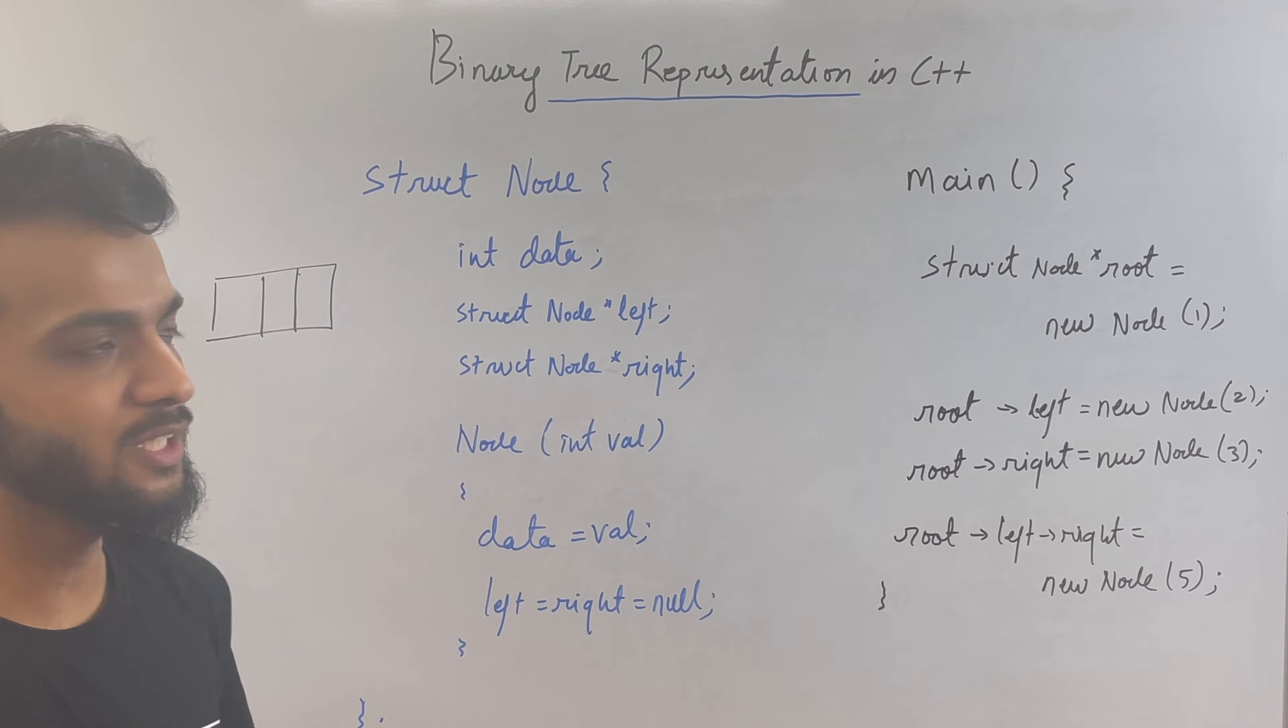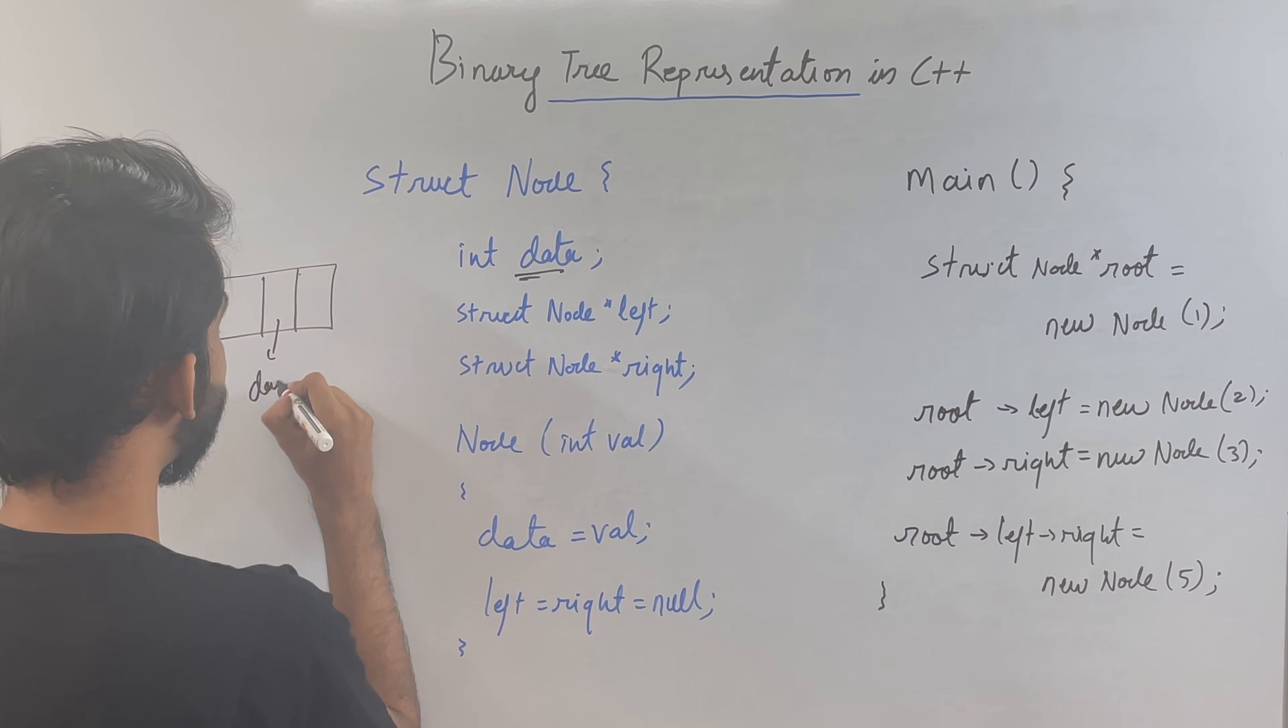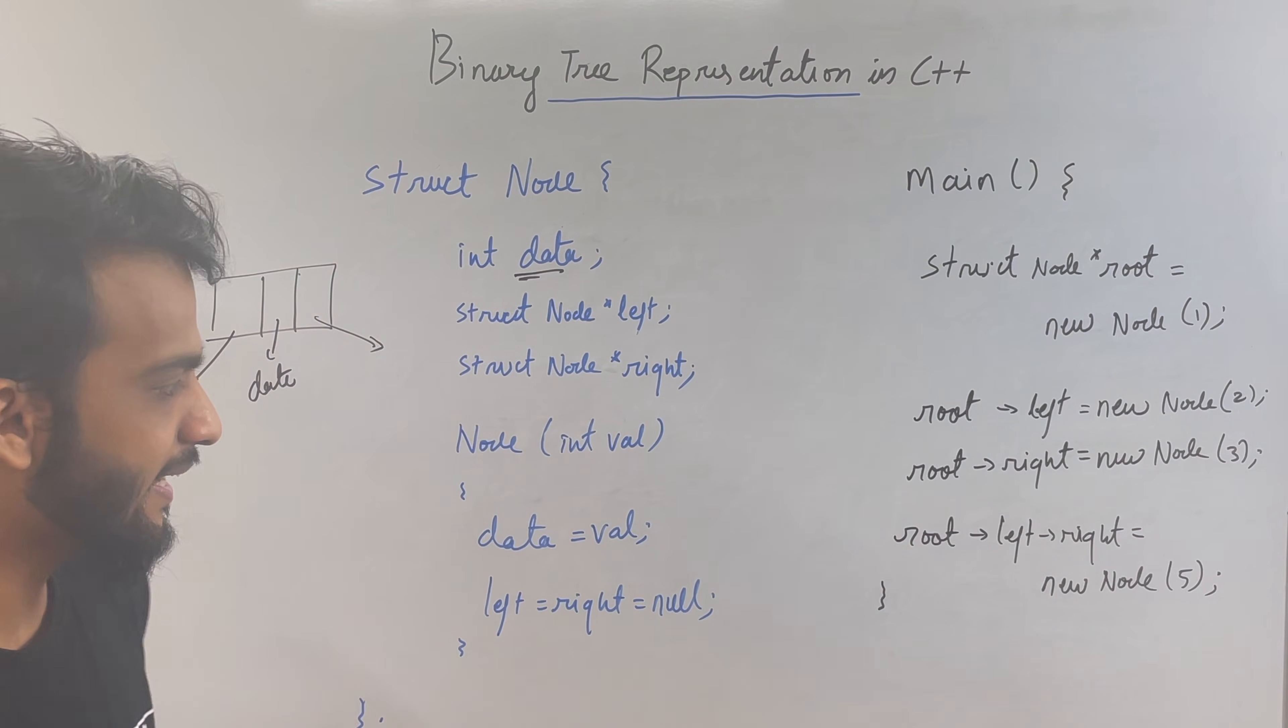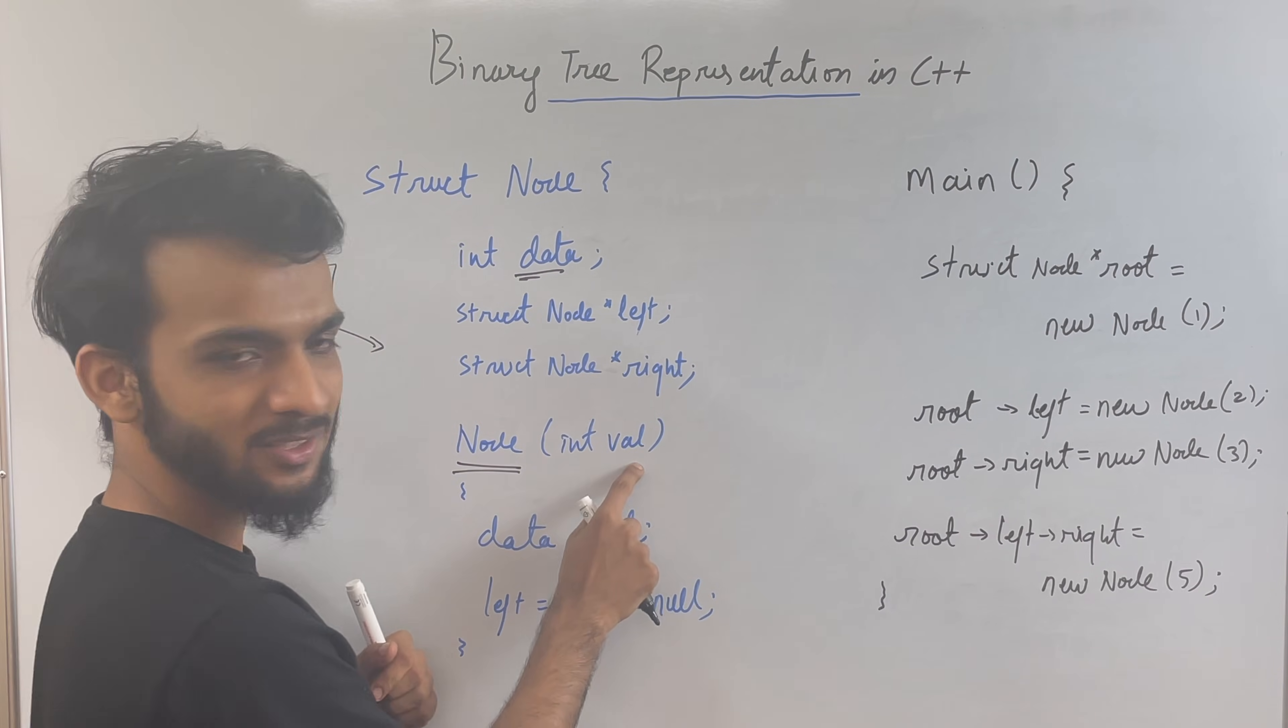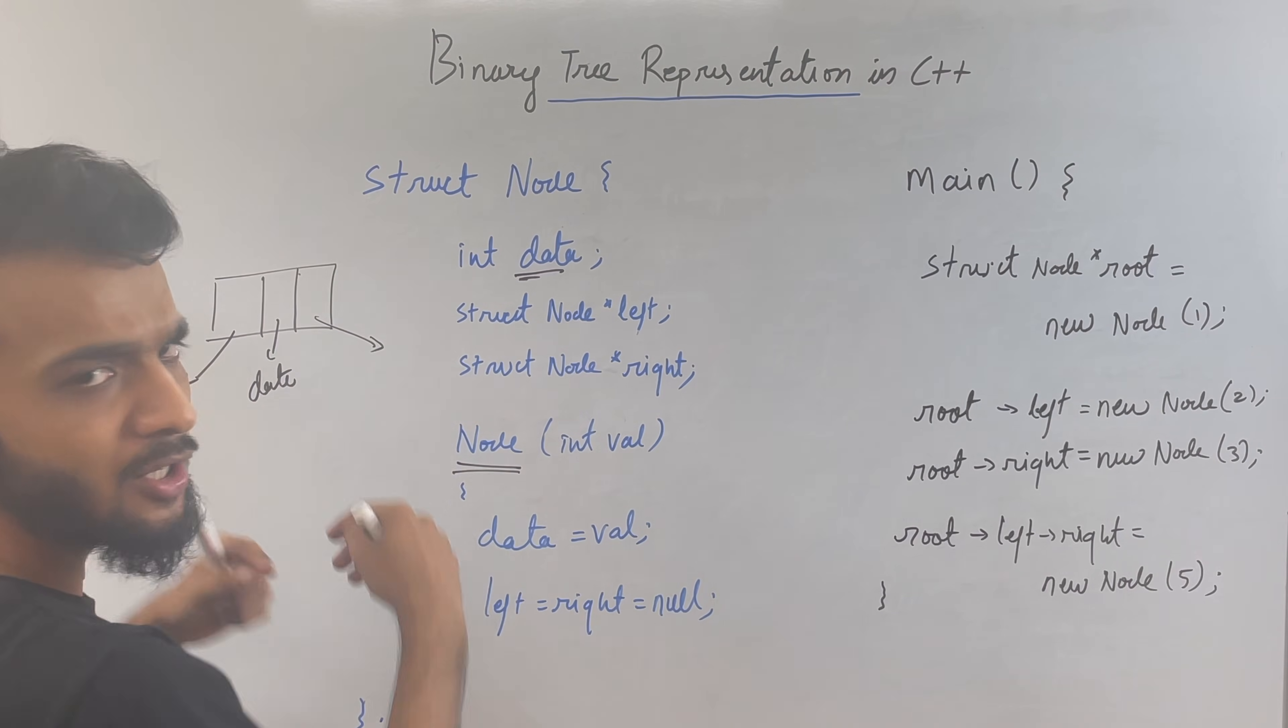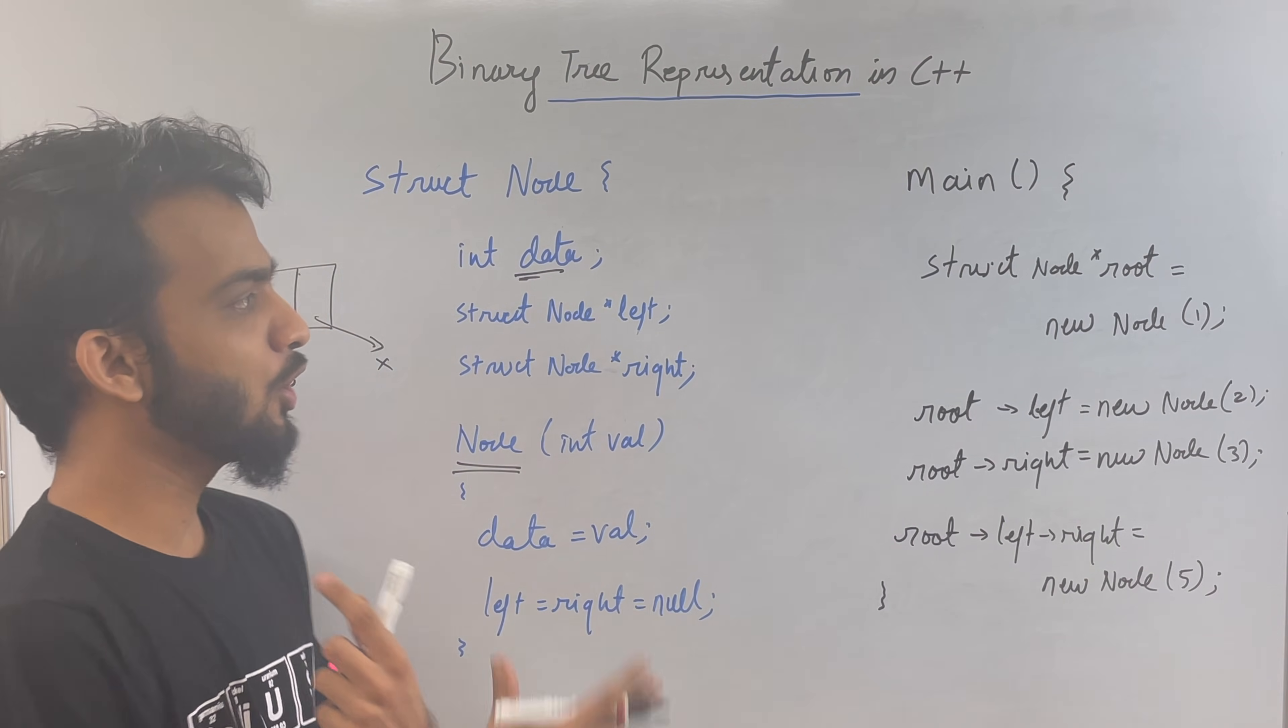The code will look something like this. So basically, this was the stuff that we were using. This data will be nothing but this guy. This will be the data. This left pointer is this guy, and the right pointer is this guy. We have defined a struct data type, and we have defined a constructor kind of thing where we will be passing on the values. This will be assigned over here. And the left and right will be assigned to null because initially, when you declare something, it is not pointing to anyone. So that's null. This is how the declaration of a particular node will look.